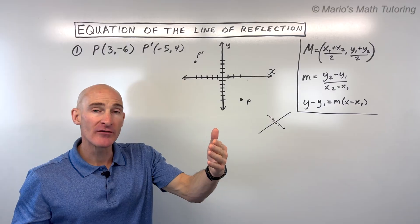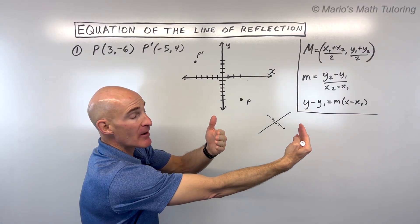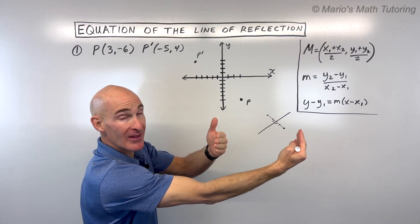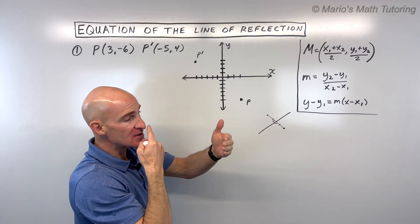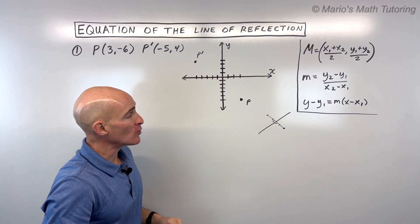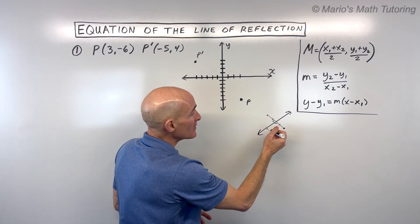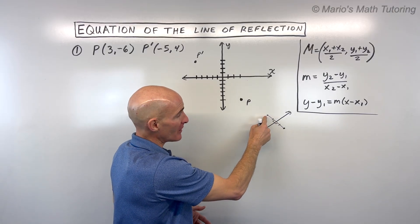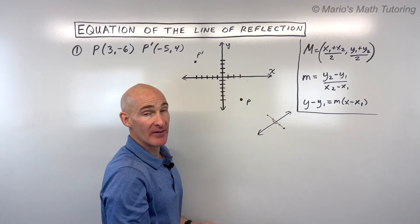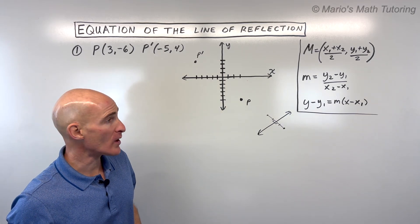It's kind of like if you were standing in front of a mirror. Like if I stand a foot in front of the mirror, it looks like my reflection is a foot behind the mirror, but notice that it's a perpendicular distance. It's that shortest distance. And so what we have here is this line is really the perpendicular bisector of the segment that connects the pre-image and the image. So that's what we're going to be doing is finding that perpendicular bisector equation.